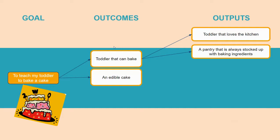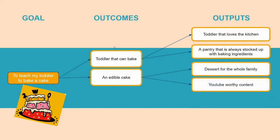And if I end up with an edible cake, outputs that could come from that edible cake outcome would be dessert for the whole family. And if I was smart enough at the beginning of this exercise to put on a camera, I might end up with some YouTube-worthy content.